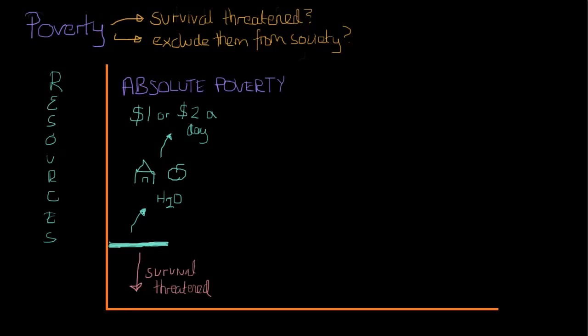One of the things that absolute poverty brings up is the fact that this level applies no matter where you are. So when we say absolute poverty is $1 to $2 a day, that could be whether you live in Africa, Canada, or even the Arctic.